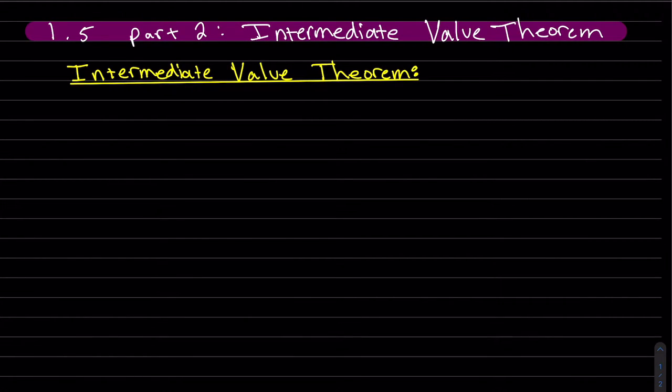So this is 1.5, the second part of it, and we're going to cover the Intermediate Value Theorem.